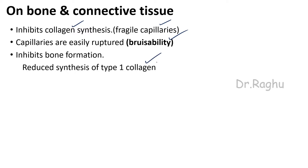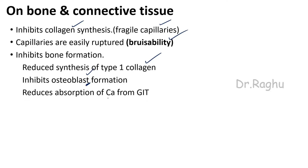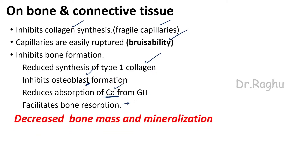Cortisol also reduces calcium absorption from the GIT — calcium is required for bone mineralization — and it facilitates bone resorption, which is demineralization or removal of calcium from bone into the plasma. Ultimately, excess cortisol decreases bone mass and mineralization. Whenever there is an excessive amount of cortisol, this can precipitate osteoporosis because of all these actions.